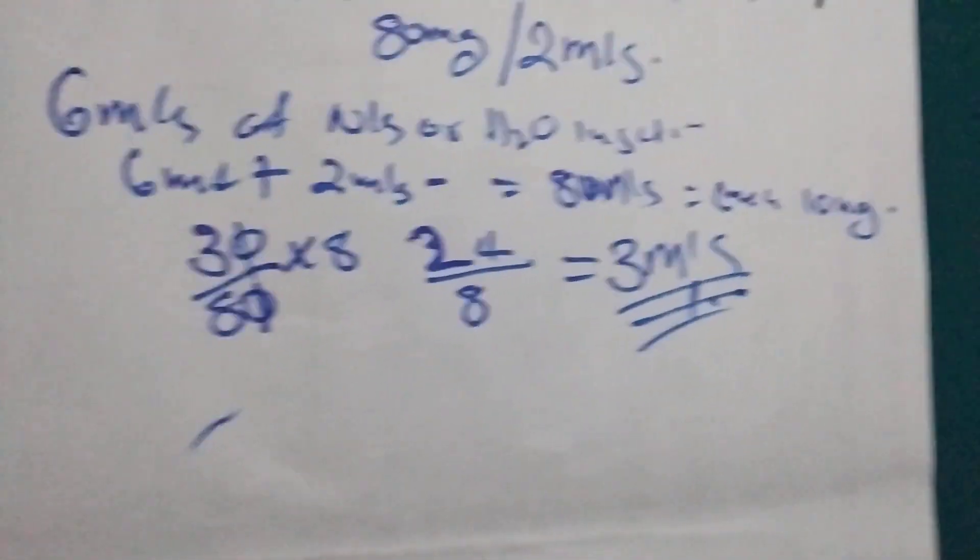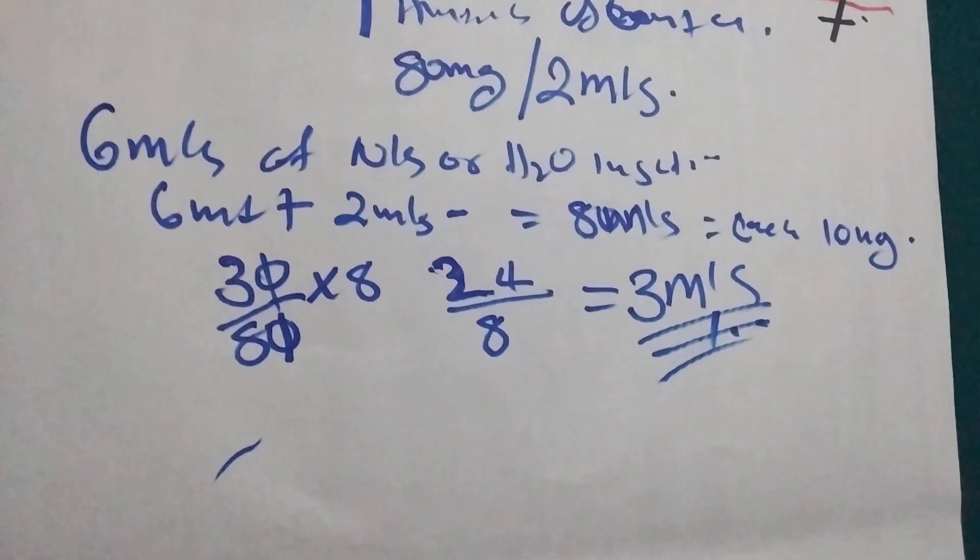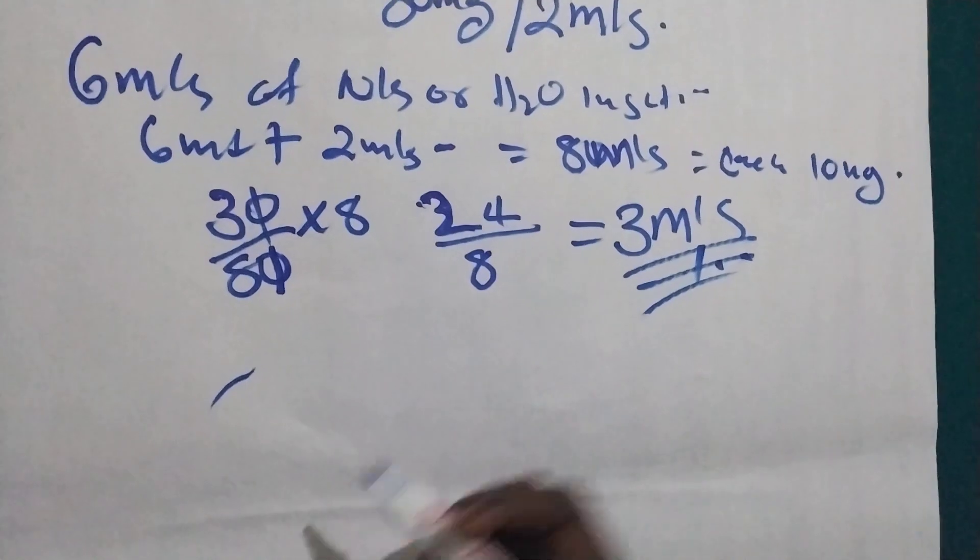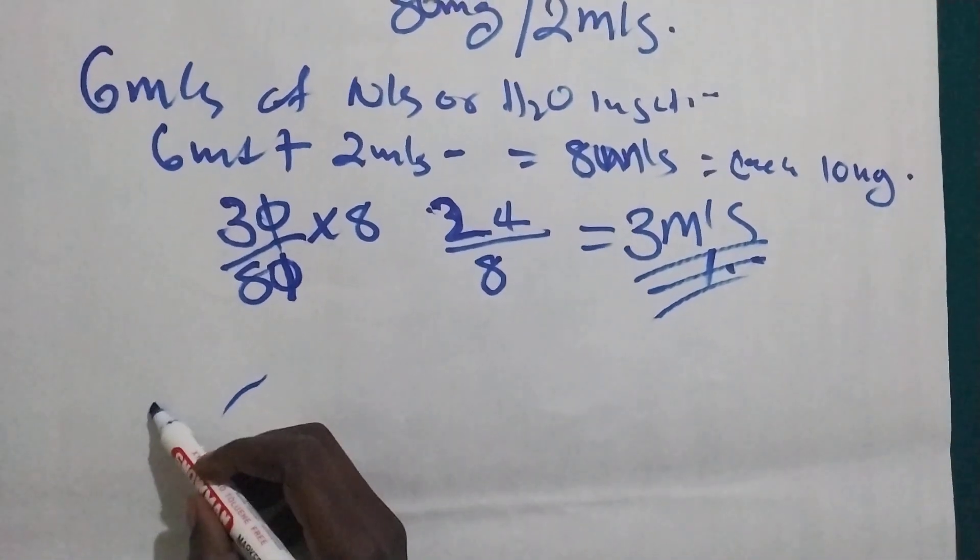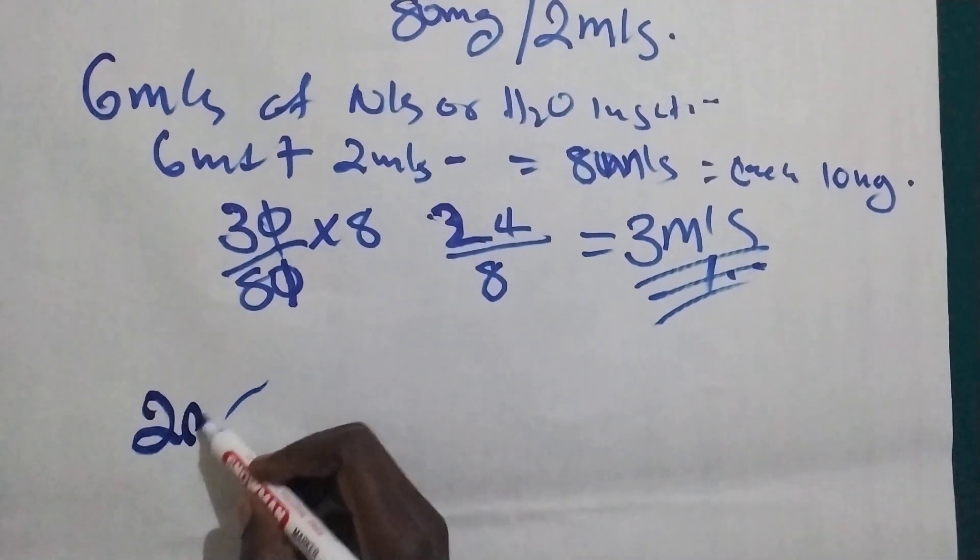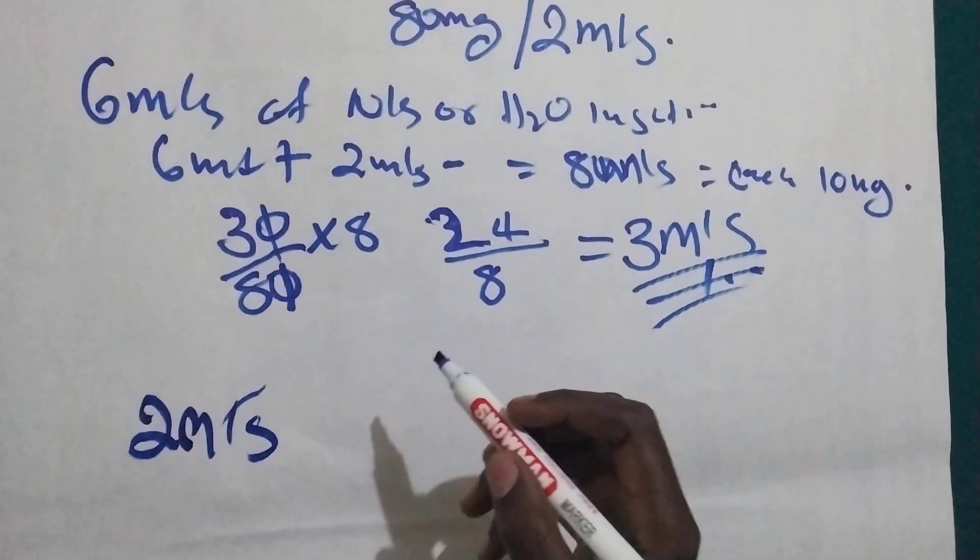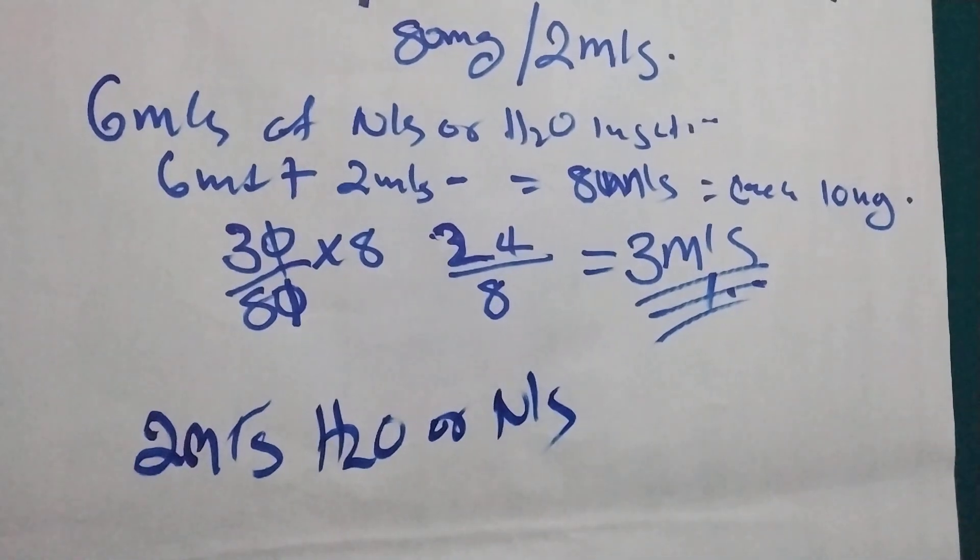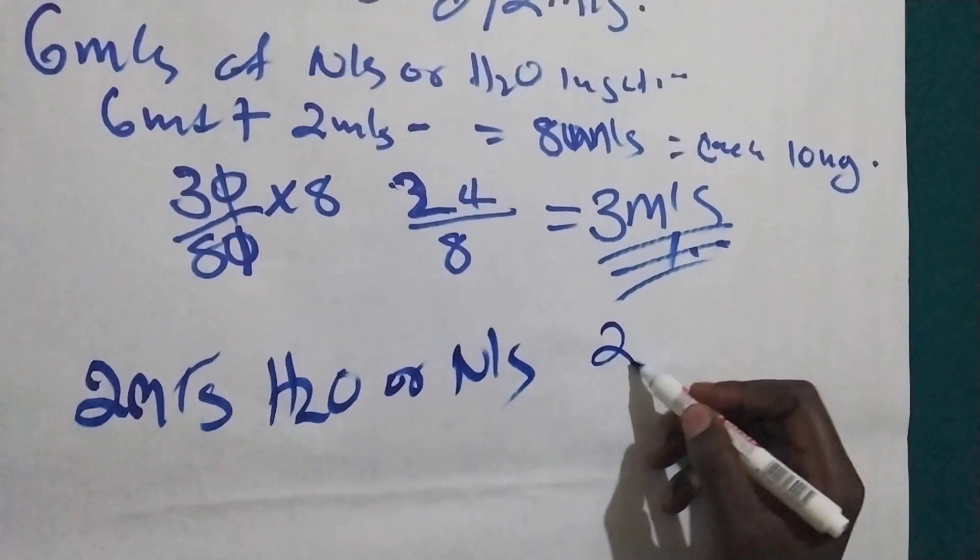Now the child is in the children's ward, those older children. So what we are going to do, we are going to use 2mLs of water for injection or normal saline, then we are going to add 2mLs